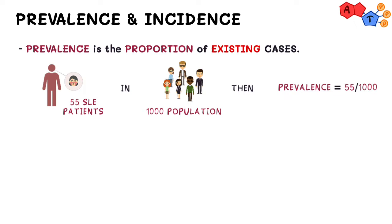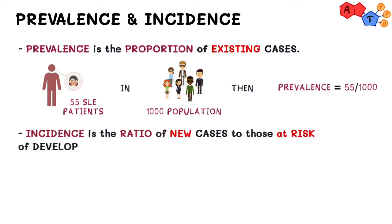Incidence is slightly more complicated. It describes a ratio of those who newly developed the disease within a given time period to all those who potentially could develop the disease.